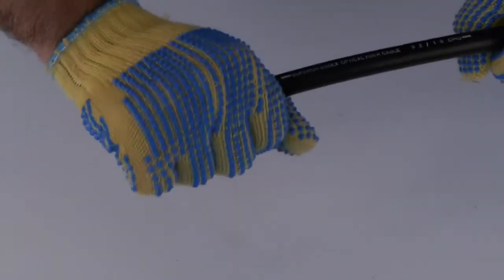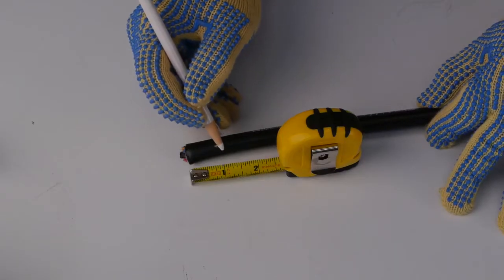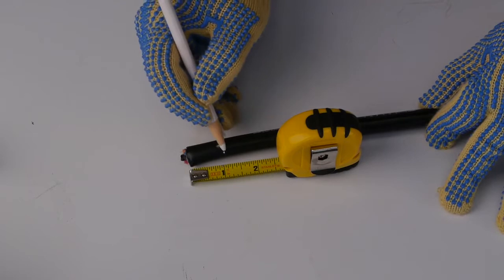Determine the end location of cable where the splice point is to be located. Mark cable one to four inches from the end of the cable.